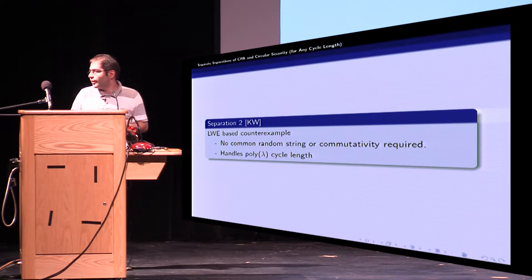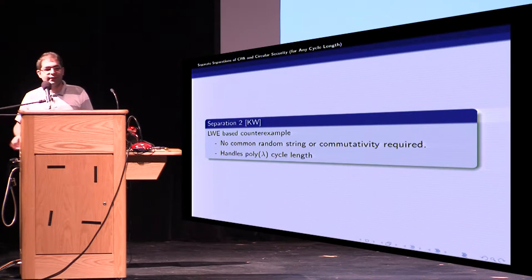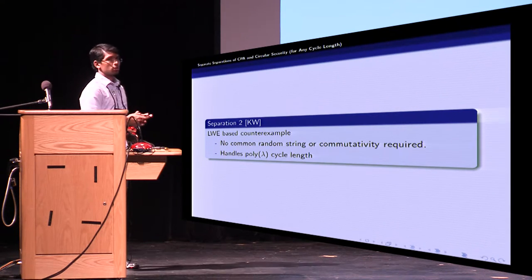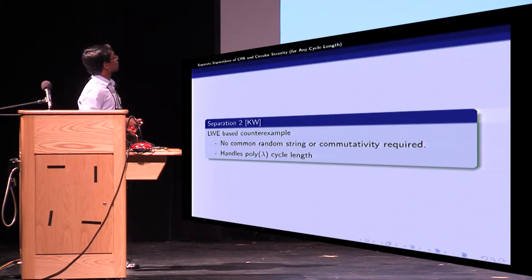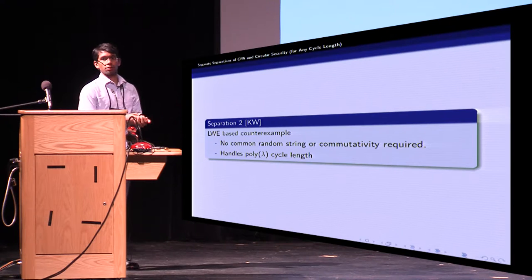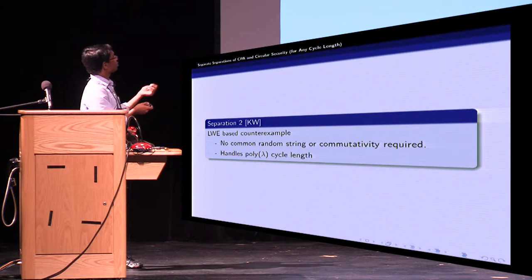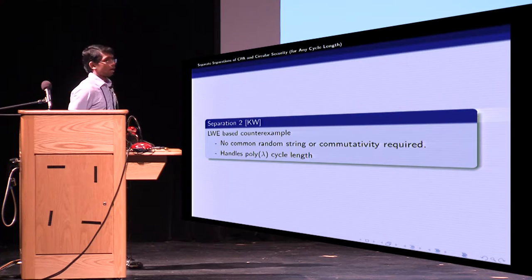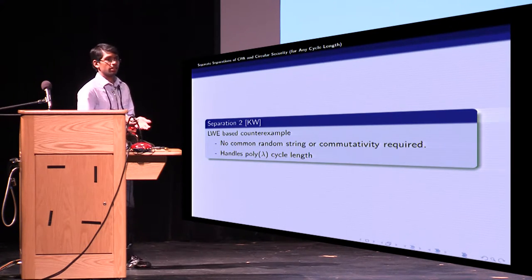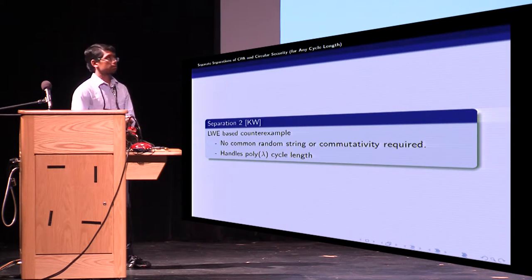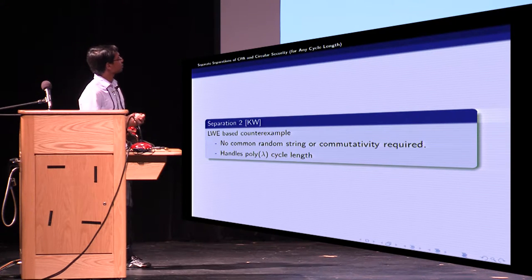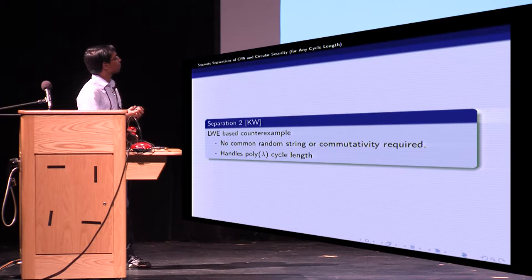Now I want Venkata to continue the talk on KW construction. Thanks. Hi, thanks. Hi, so this separation will be based on joint work with Brent Waters and in this part we show an LWE based encryption scheme which is not K circular secure and this K could be any polynomial in the security parameter. And while both separations have some common features the two constructions are inherently different and as a result each has its own pros and cons. In particular our scheme is more complicated but it does not require the common random string, does not require commutativity and can handle poly-length cycles.